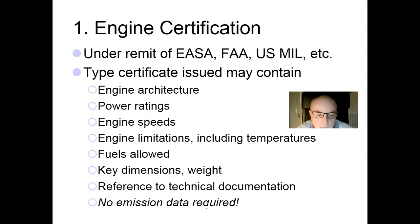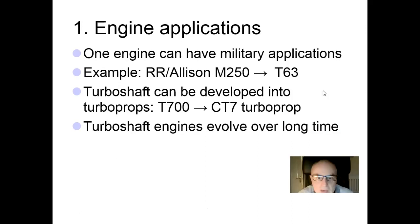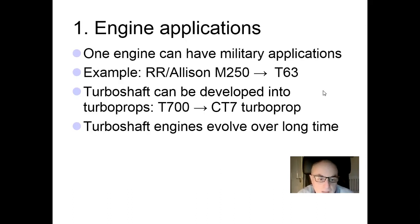Interestingly, no emissions data is required in turboshaft certification, unlike large turbofans — so we don't know what emissions these engines produce. Engines can serve both military and commercial roles; for example, the Rolls-Royce Allison M250 is renamed the T63 as a military engine. The T700 has been developed into the CT7 turboprop, which powers quite a few turboprop aircraft. There are very few companies with the design capability to produce new turboshaft engines — this is very high-tech, with key information held by very few organizations.